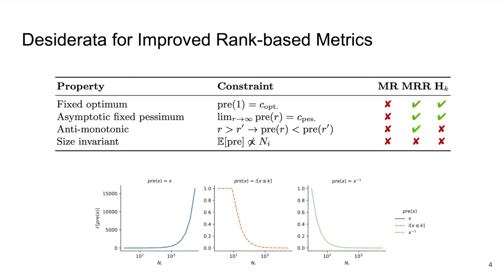So using this general form, we can better articulate four desirable properties for rank-based metrics. Since all of our metrics are defined with the monotonically increasing mean aggregation, it's convenient to describe these in terms of the pre-aggregation function. First, we want the optimal value of the metric to happen with a rank of one, which is the best possible rank. This happens in the mean reciprocal rank and hits at k, but not in the mean rank.